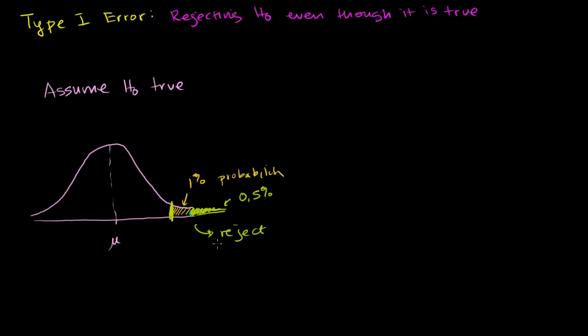Or another way to view it is there's a 0.5% chance that we have made a Type 1 error in rejecting the null hypothesis. Because if the null hypothesis is true, there's a 0.5% chance that this could still happen. So in rejecting it, we would make a mistake.